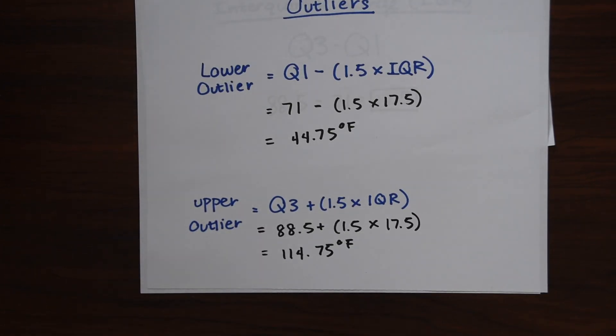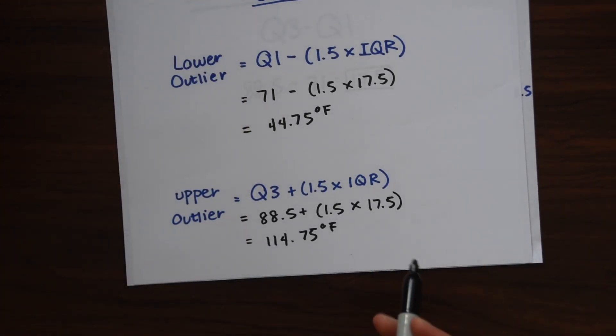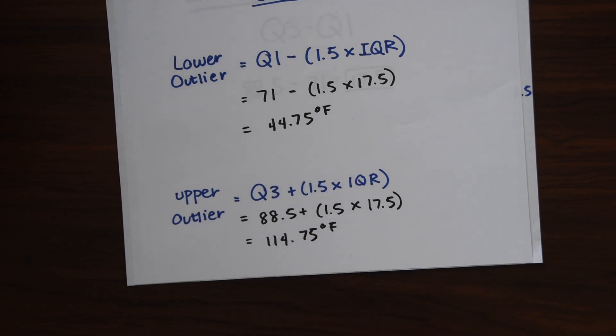So all the outliers represent are the extreme, potential extreme data points that could skew our data and skew the representation that we see on our box plots. So if any temperature is below 44.75 degrees, that would be considered an outlier. And the same for if anything is above 114.75 degrees. So there's these two extremes, anything really below the data or anything really above. And that's what outliers are.